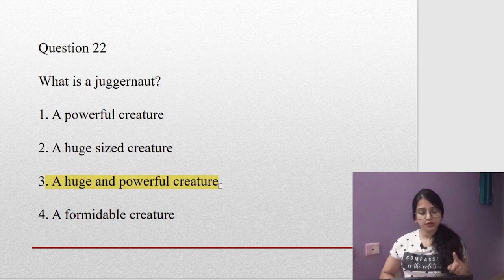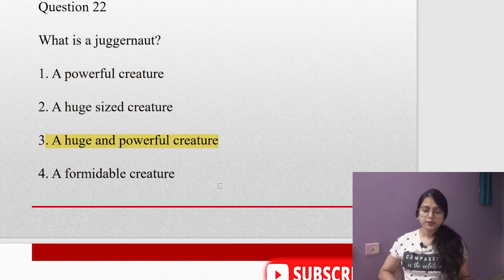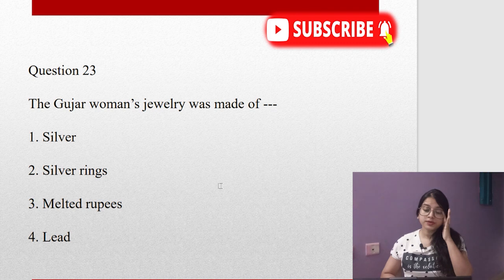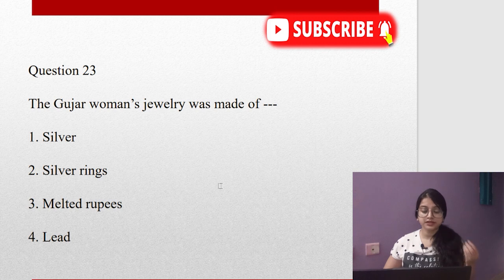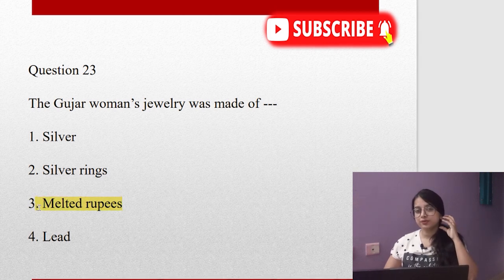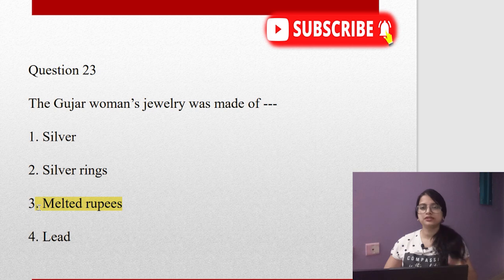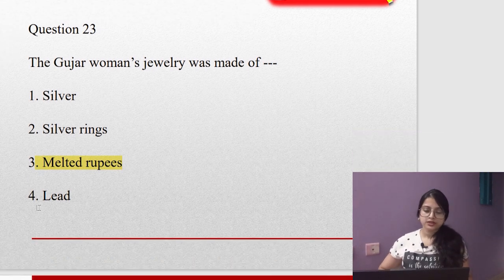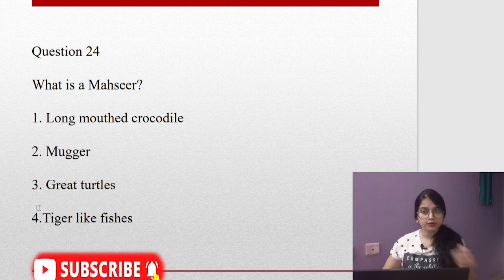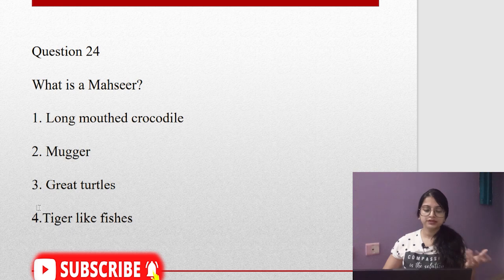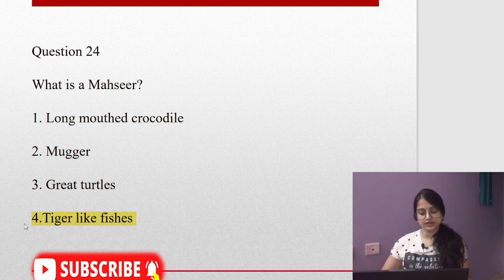Question twenty-three: The Gujar woman's jewelry was made of what? Silver, silver rings, melted rupees, or lead? If you have read the story very minutely, you will be able to answer this question. Those were melted rupees—the ornaments, the jewelry that she wore. Question twenty-four: What is a mahseer? A long-mouth crocodile? No, that is gharial. Mugger? That is another type of crocodile. The great turtles? No. Tiger-like fishes? Mahseer is tiger-like fishes.